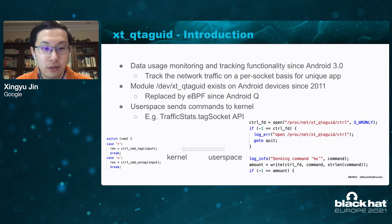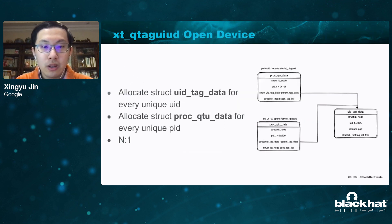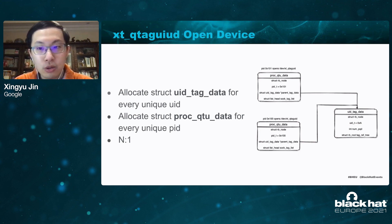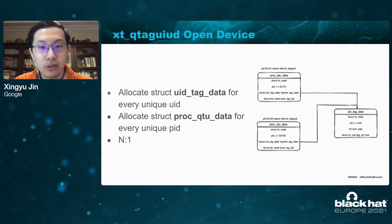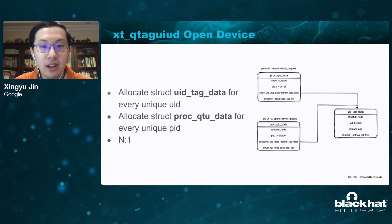I will introduce three different scenarios over the module: tag a socket and untag a socket. When a user-space program opens the kernel module, the module will allocate two different structures in respect of per UID and PID. There will be only one unique UID tag data structure, but there might be multiple proc_qtaguid data structures for every PID, which are essentially linked to the UID tag data structure.